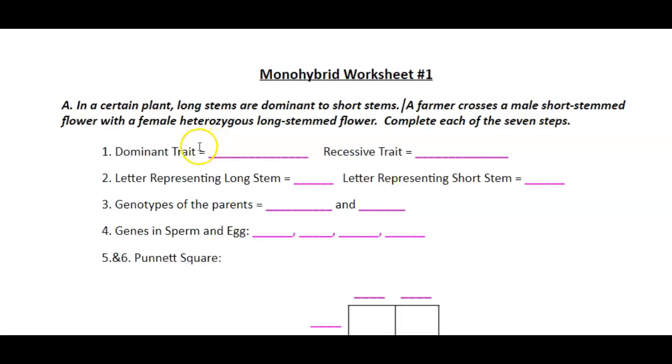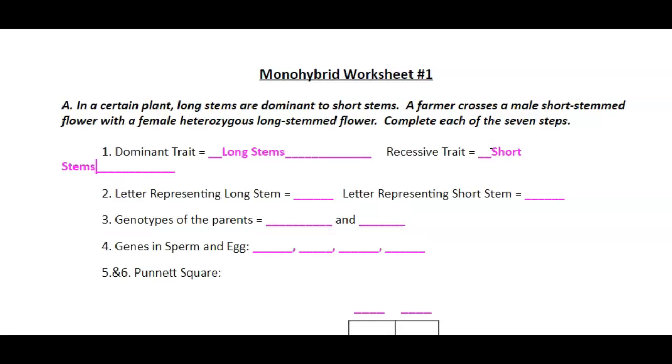So our first step here, figure out what the dominant trait is and the recessive trait. It tells us in the first sentence that long stems are dominant to short stems. So I'm going to write long stems for dominant, short stems for recessive.